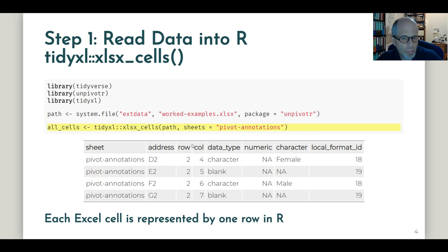I'll show you a couple of rows from this data. So the key idea is that this xlsx_cells function processes the data in such a way that each cell of the original Excel table is an entire row of data in R.